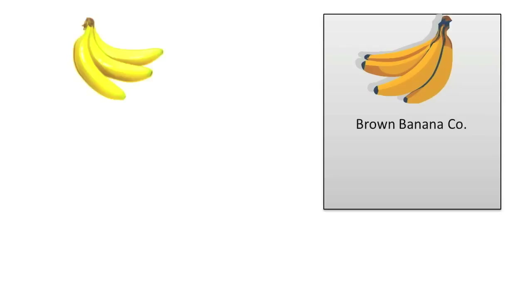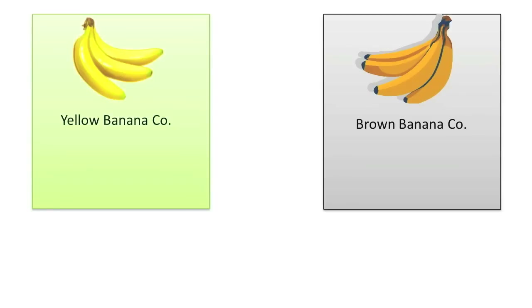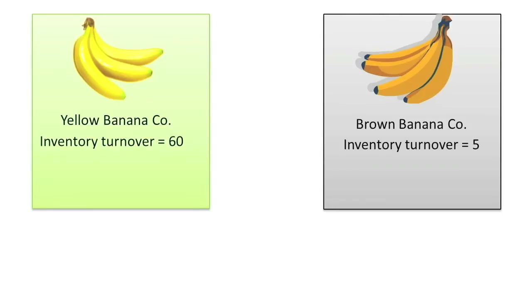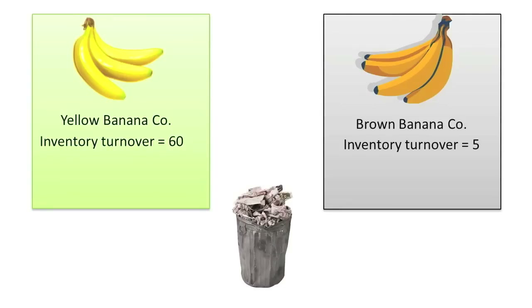Let's assume that two banana retailers, Brown Bananaco and Yellow Bananaco, had inventory turnover ratios of 5 and 60 respectively. Assuming bananas ripen within one week of being shipped, which company's management appears to be doing a horrible job at getting the bananas sold before they overripen and have to be thrown away? Which of the two companies is probably on the quickest path to failure because of its inability to efficiently and effectively manage its banana purchases and sales?